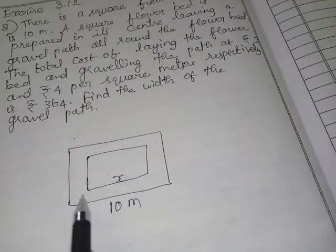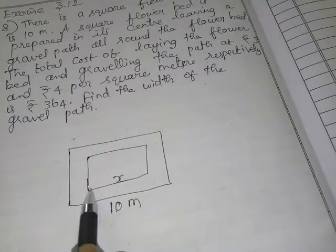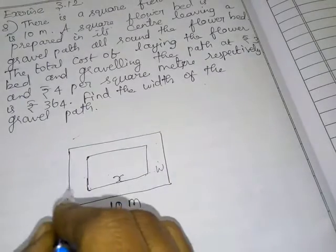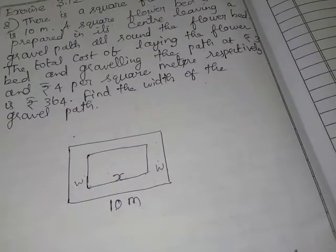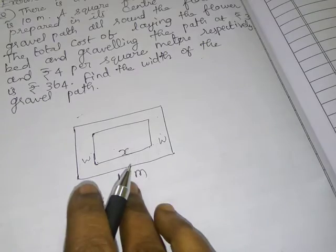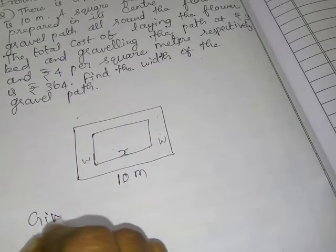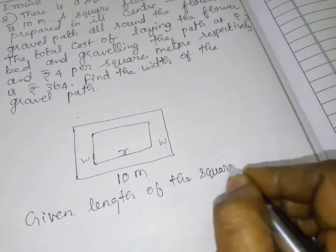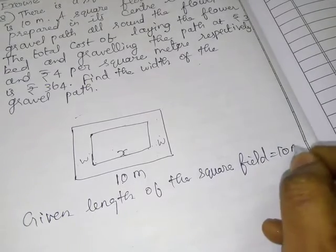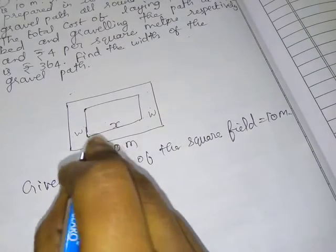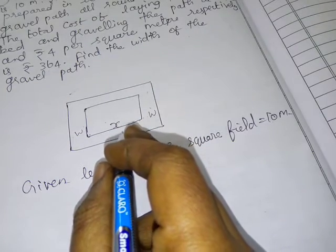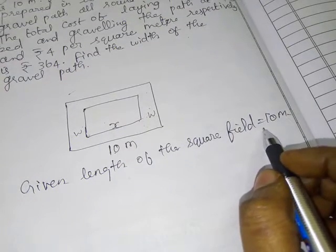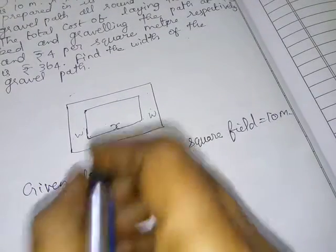This is the width of the gravel path, and this is the width of the square field. Let this be x meters — this is the side of the flower bed.